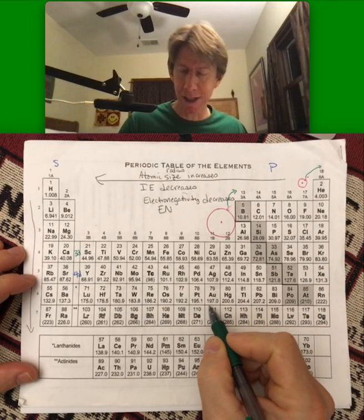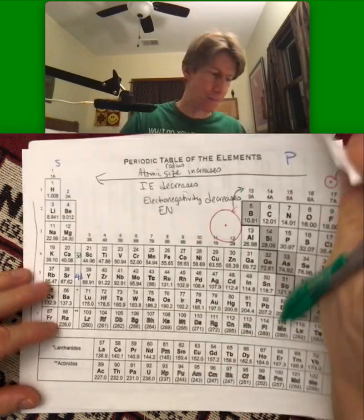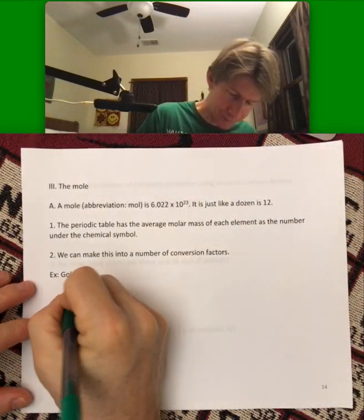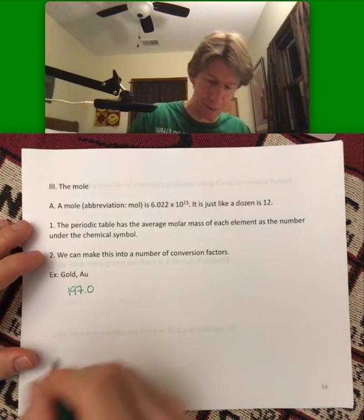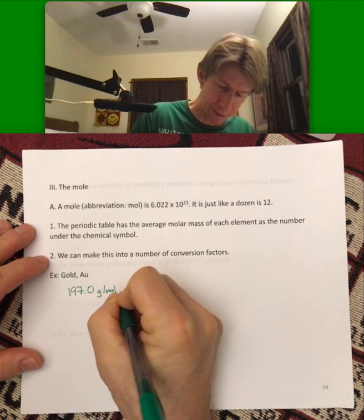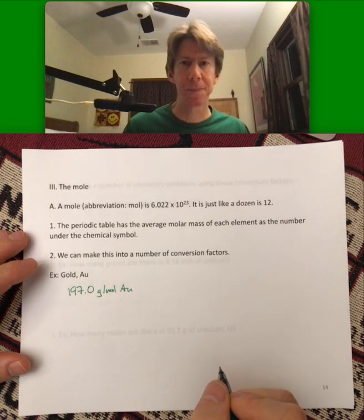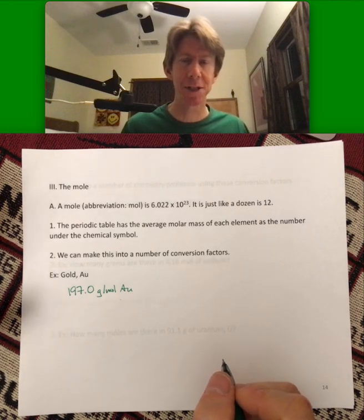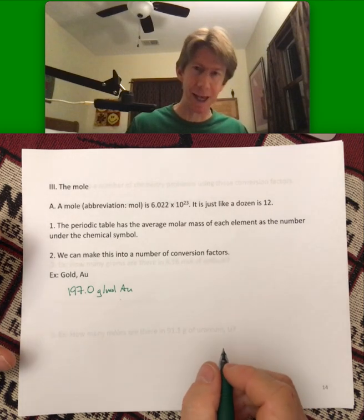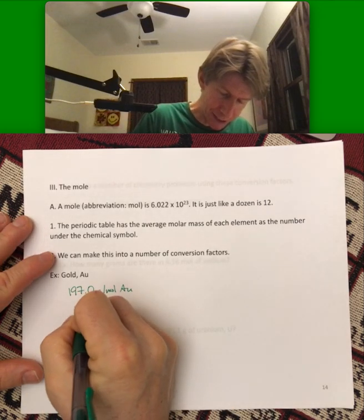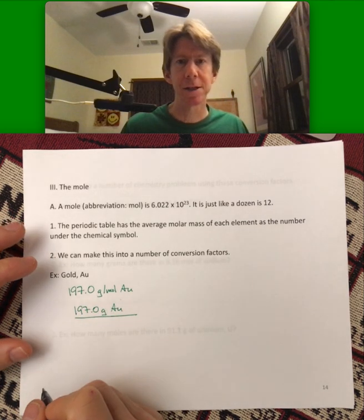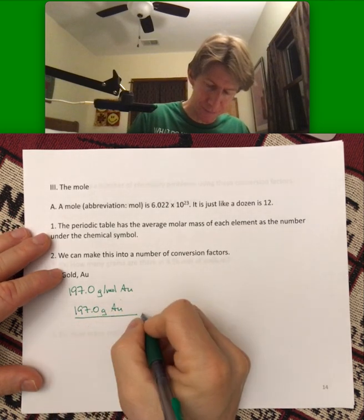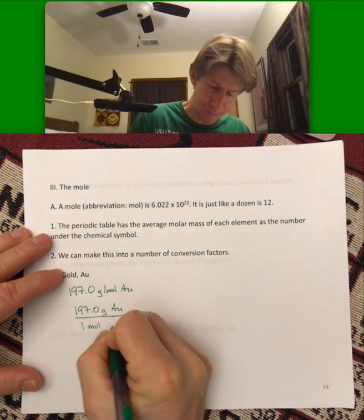Gold is AU. The number under AU is 197.0. That means there are 197.0 grams per mole of gold. That's what the periodic table tells us. We're turning this into conversion factors. 197.0 grams of gold is per one mole of gold. That's one of our conversion factors.